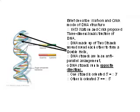The DNA strands are in an anti-parallel arrangement — the DNA strands run in opposite directions. One strand is oriented at 5' to 3', and the other is oriented at 3' to 5'.